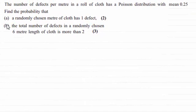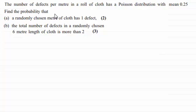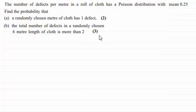Hi there. For this question we're told that the number of defects per meter in a roll of cloth has a Poisson distribution with a mean of 0.25. We're asked to find the probability that in part A a randomly chosen meter of cloth has one defect, for two marks, and in part B the total number of defects in a randomly chosen six meter length of cloth is more than two, for three marks.